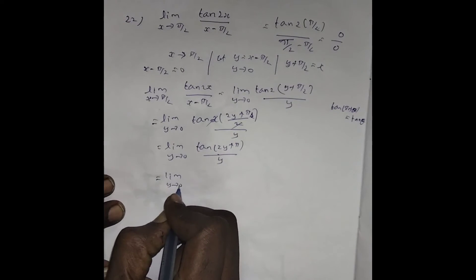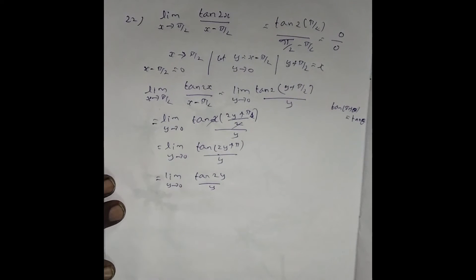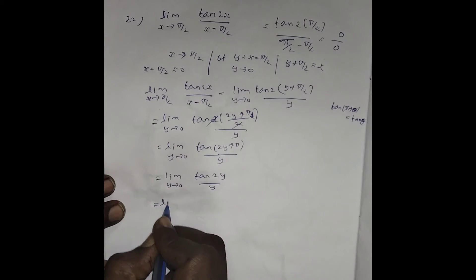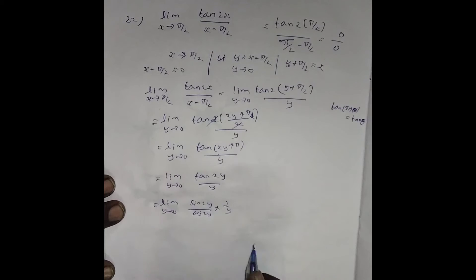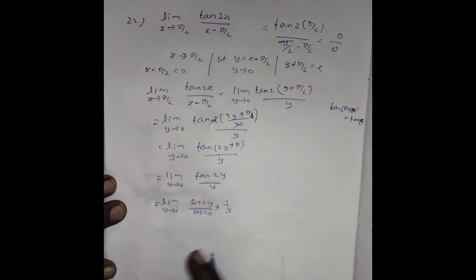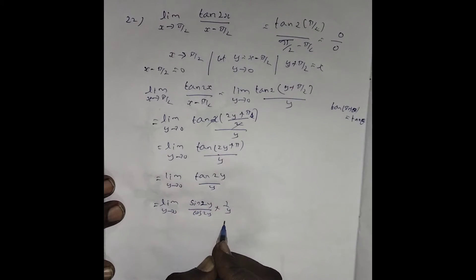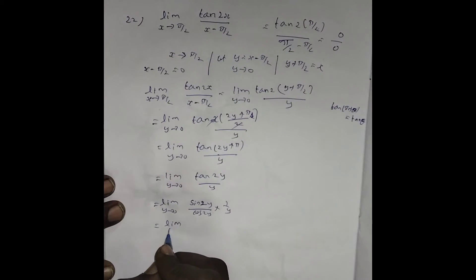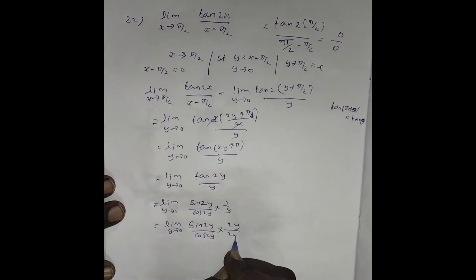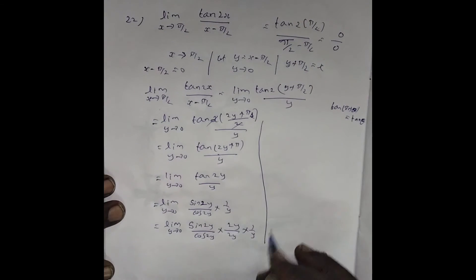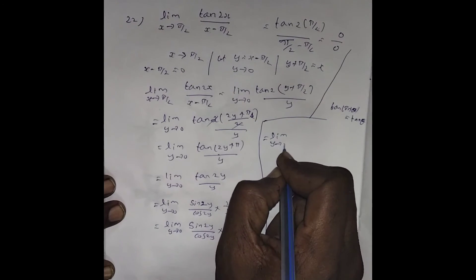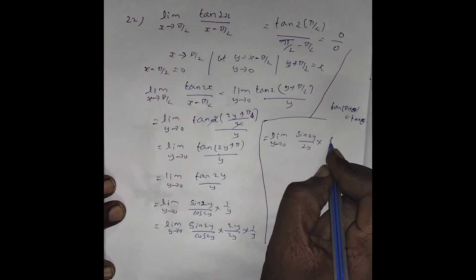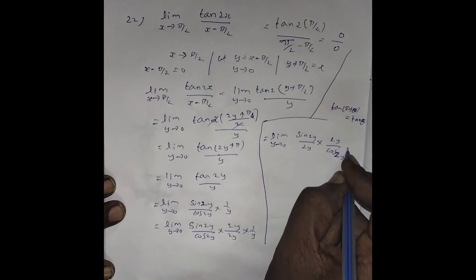So we write lim(y→0) [tan(2y) / y]. Now changing tan(2y) into sin/cos form: lim(y→0) [sin(2y) / cos(2y)] / y. Since substituting gives 0/0, we multiply and divide by 2y: lim(y→0) [sin(2y)/cos(2y)] · (2y) / (2y) · (1/y). Bringing 2y to the denominator of the sin term gives lim(y→0) [sin(2y)/(2y)] · [2y / (cos(2y))] · (1/y).